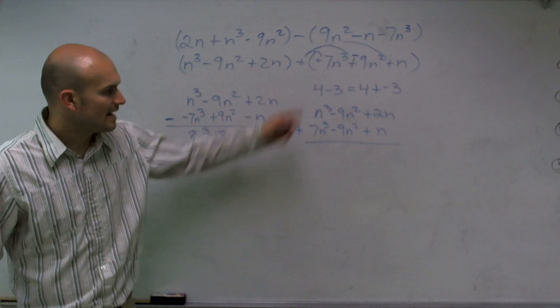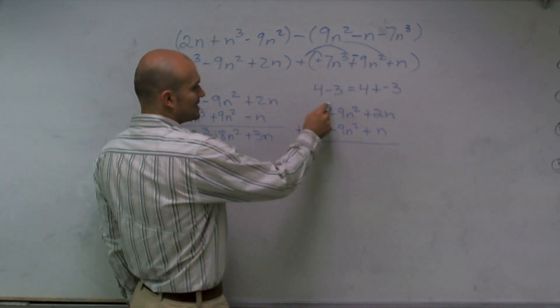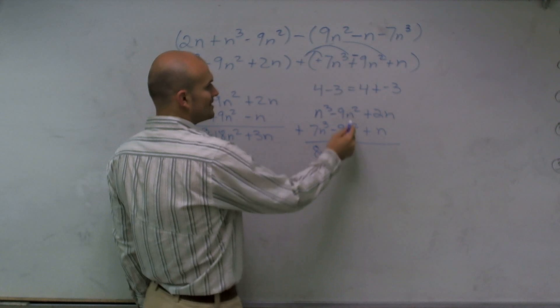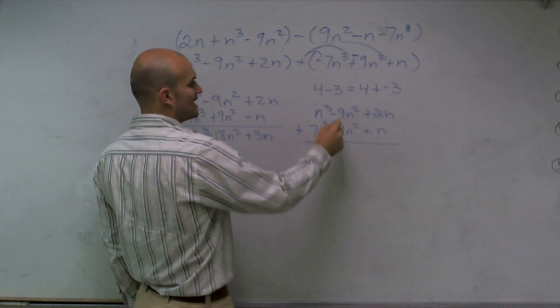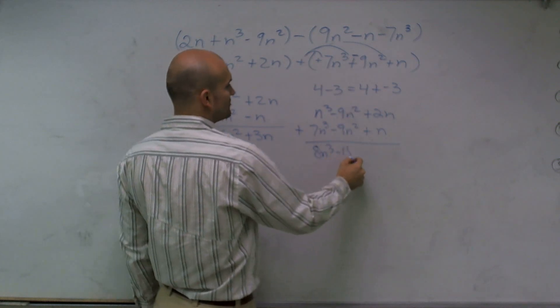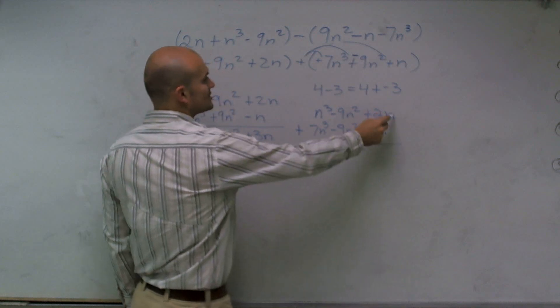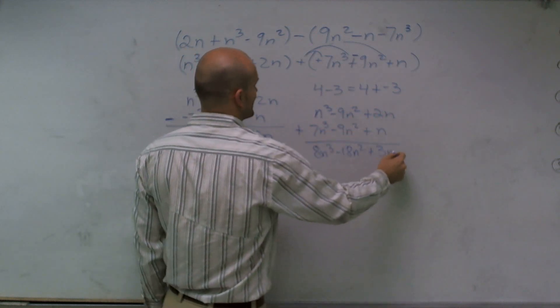And what you'll see is now as I add these vertically, n cubed plus 7n cubed is 8n cubed. 9n squared plus a negative 9n squared is a negative 18n squared and 2n plus n equals a positive 3n.